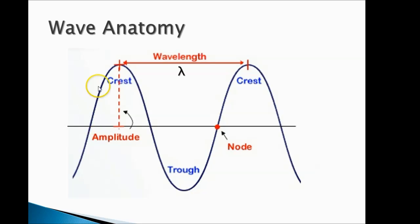You could start here and you go all the way up, all the way down, and back to where you ended. So a wavelength could also be from trough to trough all the way up and all the way back down. That is one wavelength.